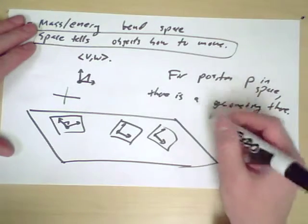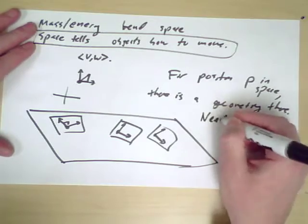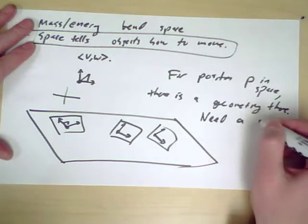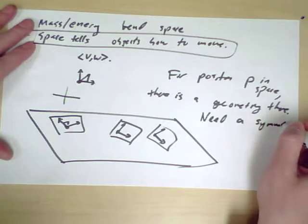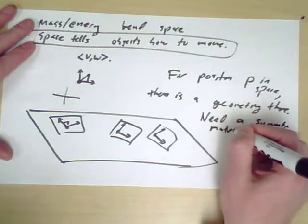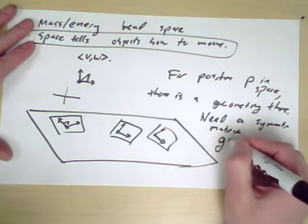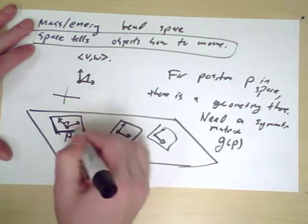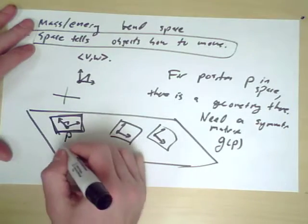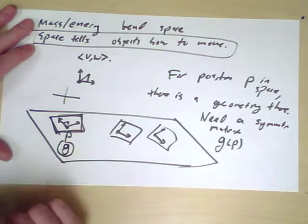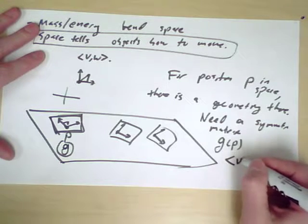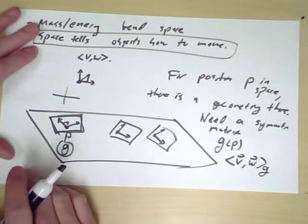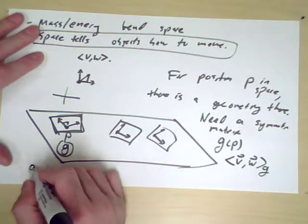So what we need is a Hermitian, or actually since we're working with the real numbers here, a symmetric matrix at every point. And we call this G of P. So P is the point you're sitting at, this is P. And nearby P, there's a matrix G, a symmetric matrix, which we consider the geometry given by V W defined by G. And G is called the metric.